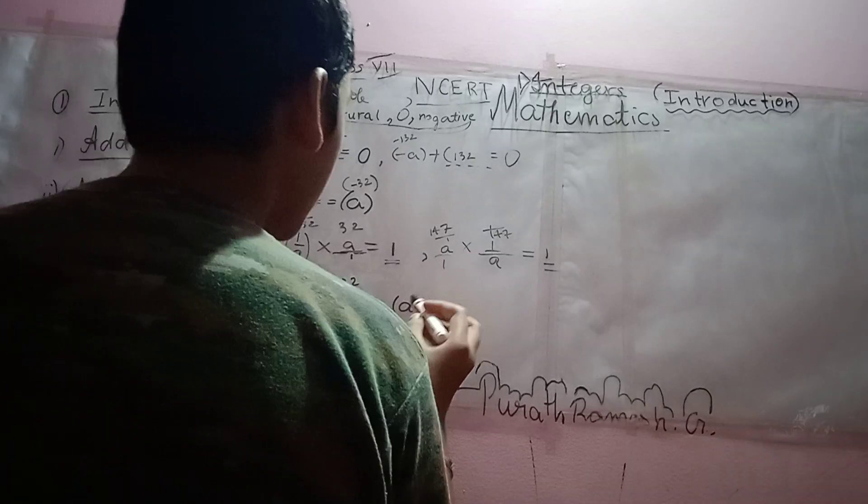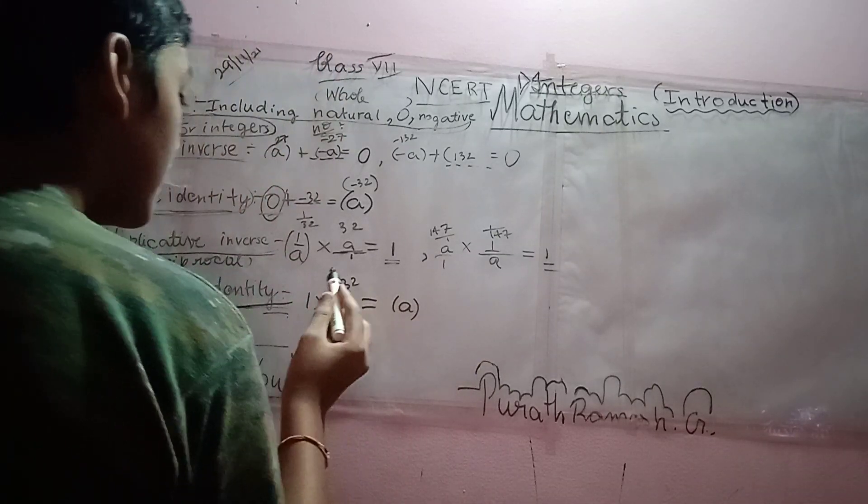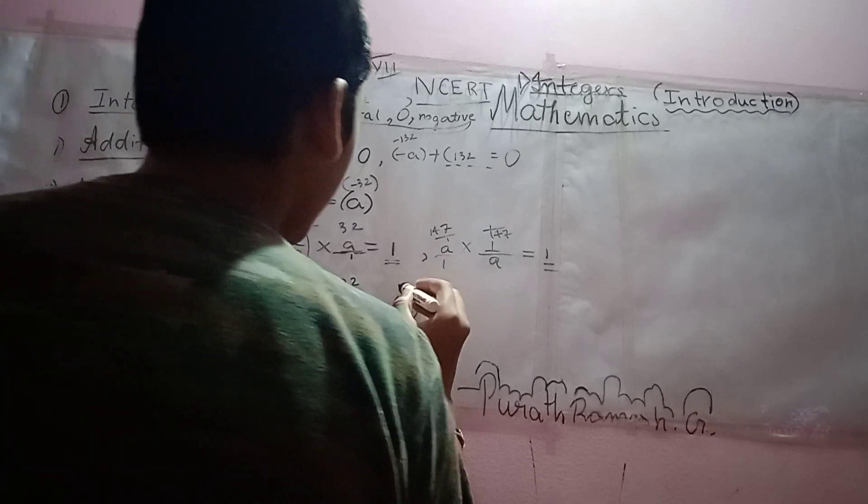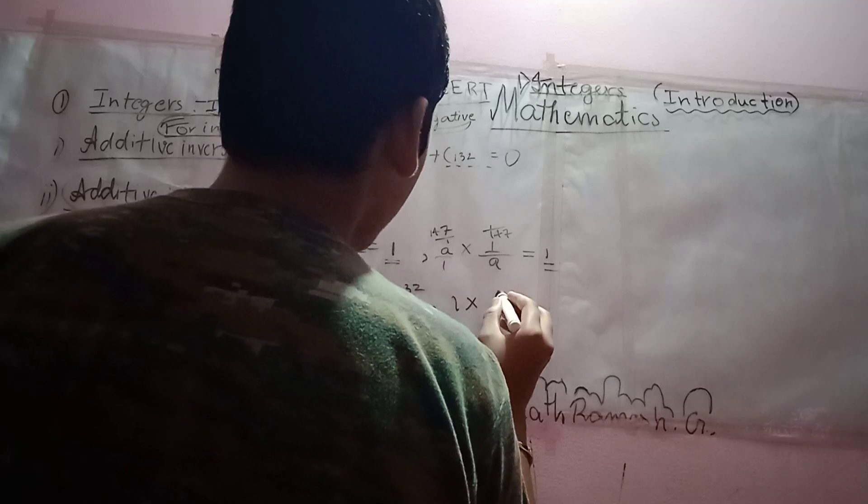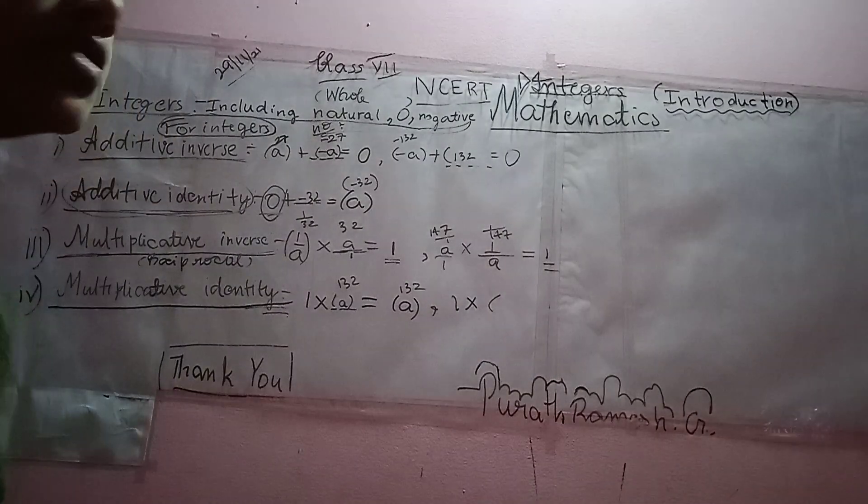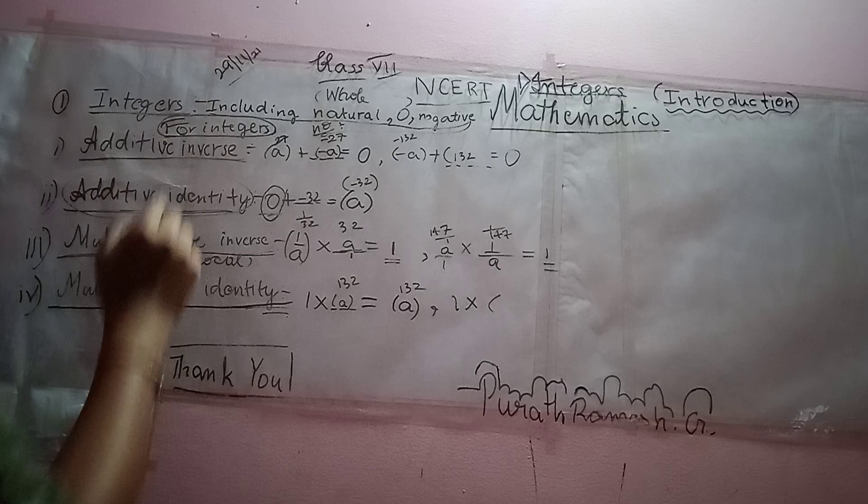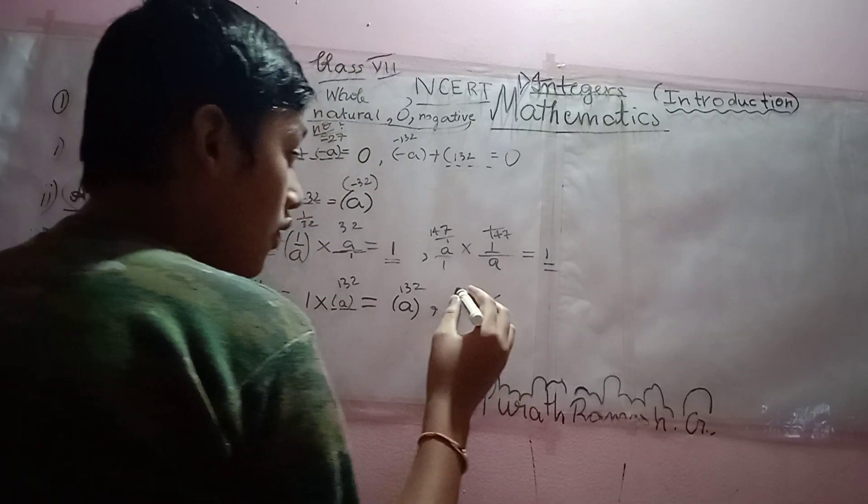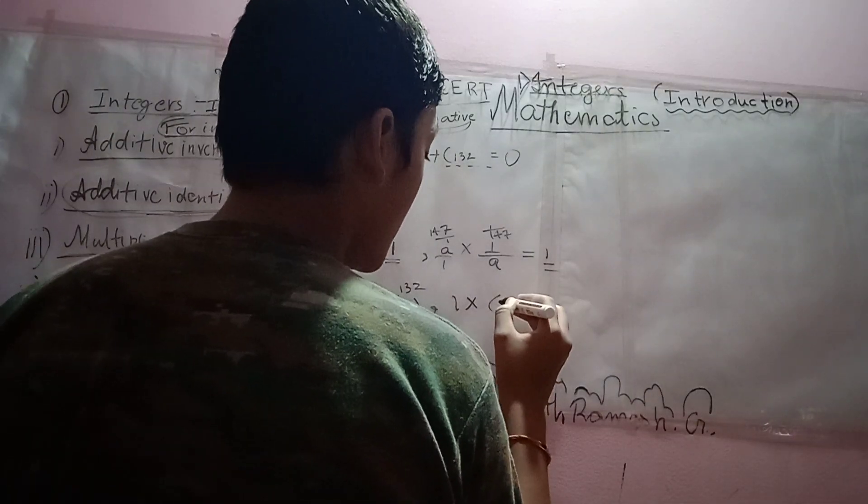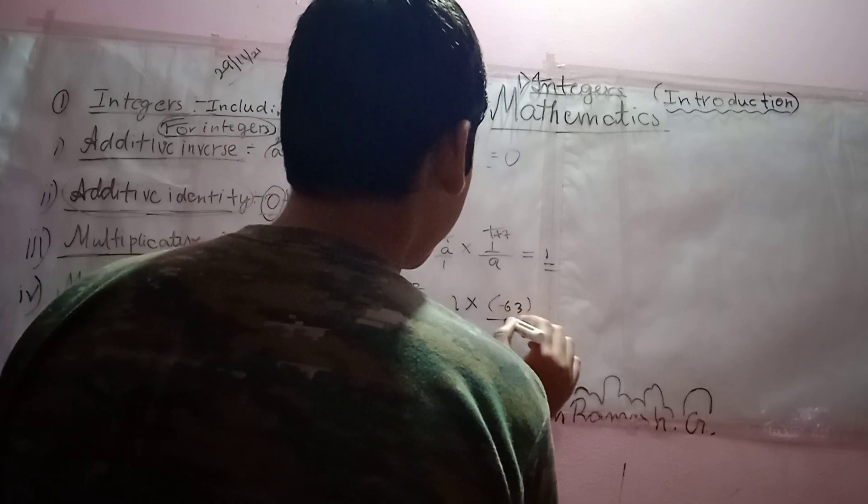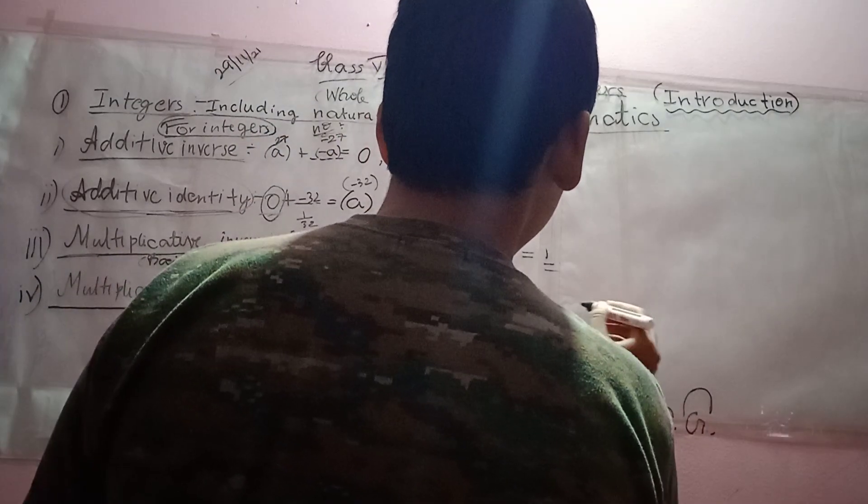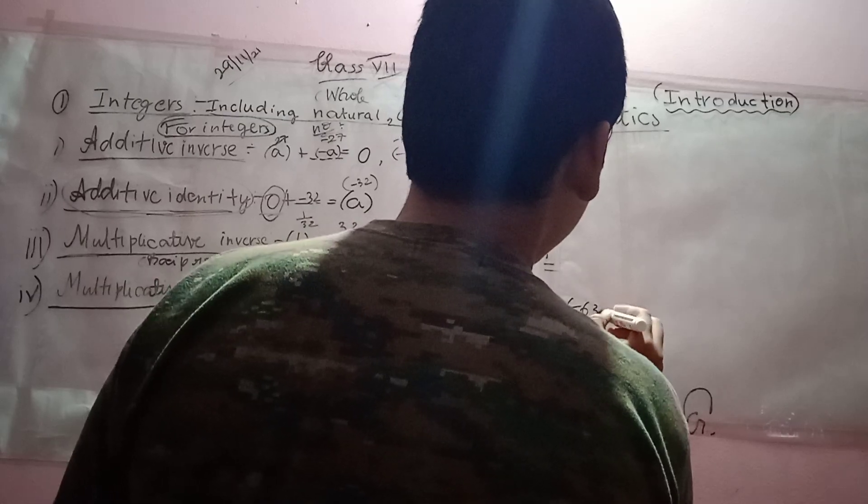And if we multiply 132 into 1, the product will be A which is 132. One more example. 1 into, it will be same for negative integers as negative integers are including in integers. So, 1 into minus 63 will be equal to minus 63 itself.